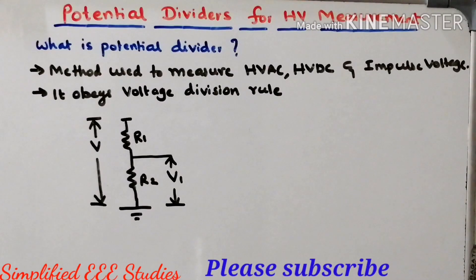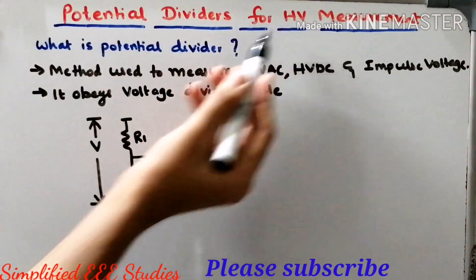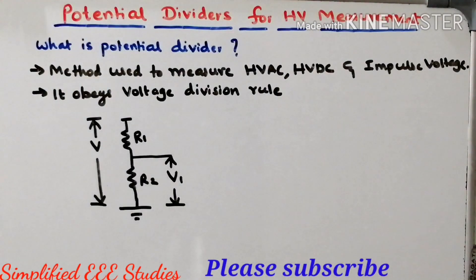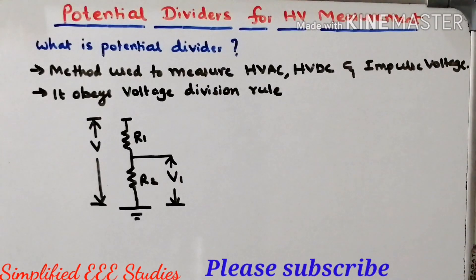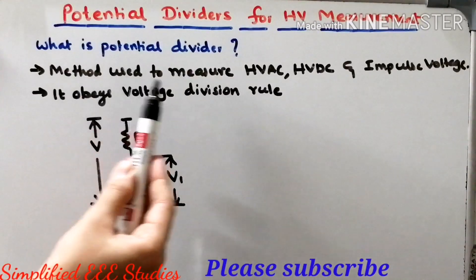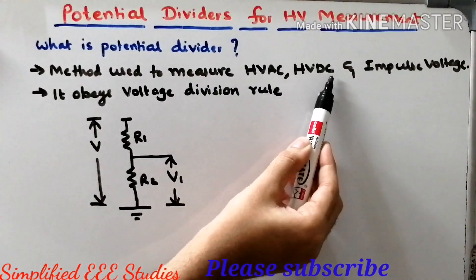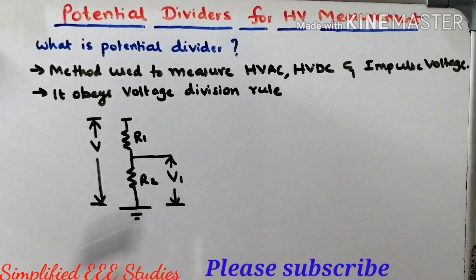Hello everyone. In this video I will be discussing the importance of potential dividers for high voltage measurement. Let us see what do we mean by potential divider and how it is going to help for measuring high voltage. The potential divider is a device which is used to measure high voltage AC, high voltage DC, and impulse voltage.